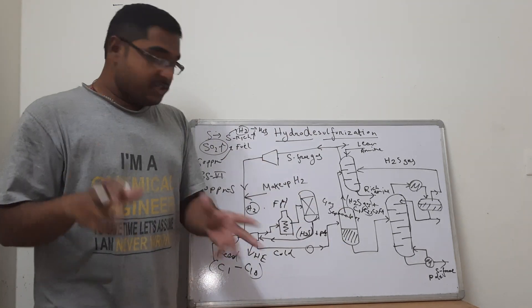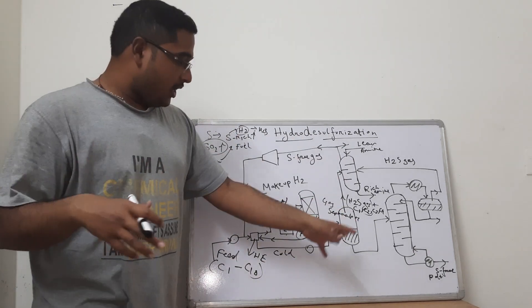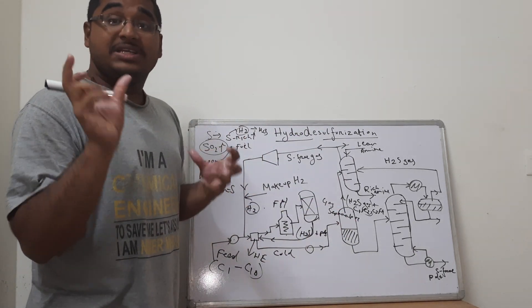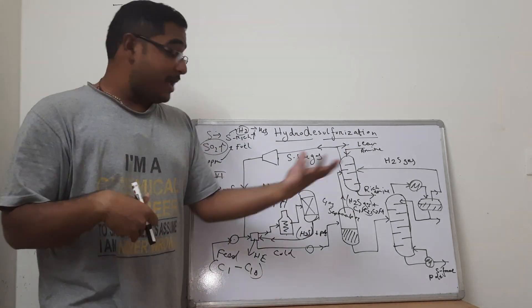We have already separated out the liquid stream, the C5, C6, C7, diesel, ATF cuts, Kero cuts we have separated. But what about the C1, C2, C3, C4? They also primarily have a tendency to form gas and H2S is primarily present as gas.